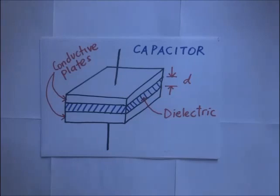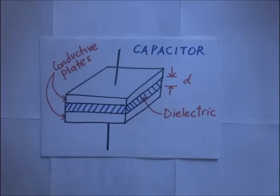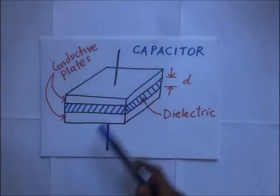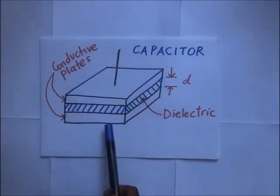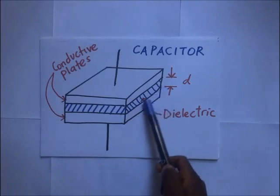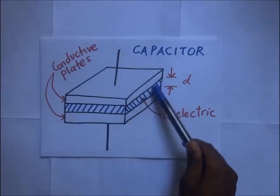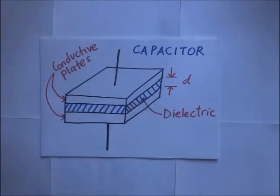Now, what exactly is a capacitor? It is simply a passive two-terminal device which is used to temporarily store electrical charge. In our diagram here, we have a capacitor with two terminals connected to two conductive plates — one on the top and one at the bottom — and in between is an insulator, which we are calling the dielectric.